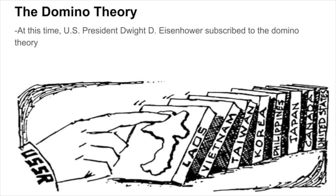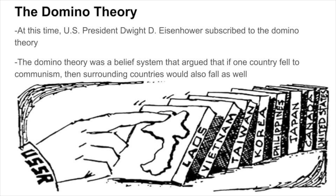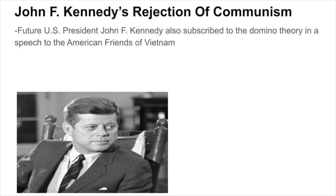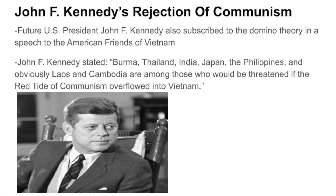At this time, U.S. President Eisenhower subscribed to the domino theory — a belief that if one country fell to communism, surrounding countries would also fall. Future U.S. President John F. Kennedy also subscribed to this belief, stating in a speech: 'Burma, Thailand, India, Japan, the Philippines, and obviously Laos and Cambodia are among those who would be threatened if the red tide of communism overflowed into Vietnam.'